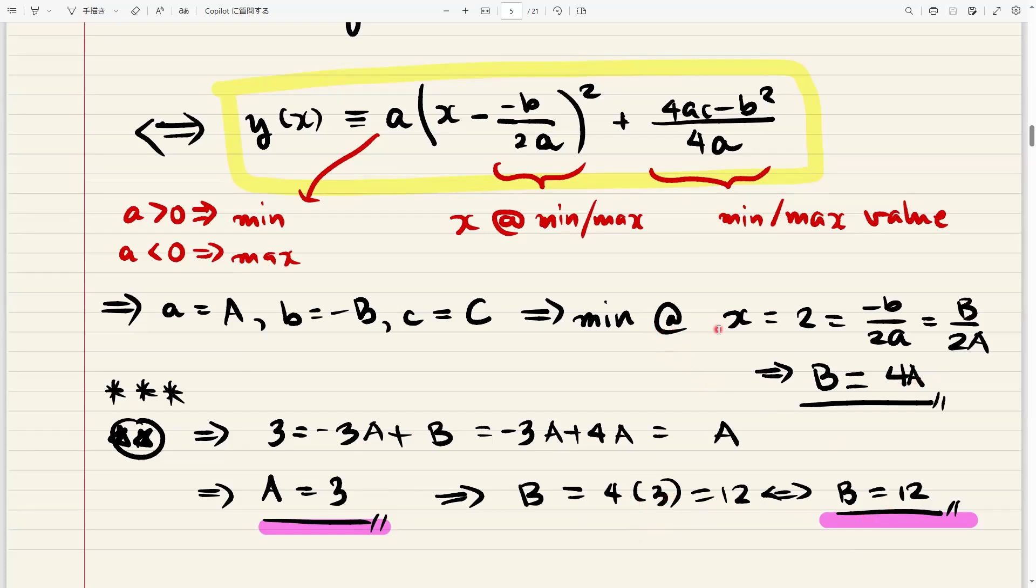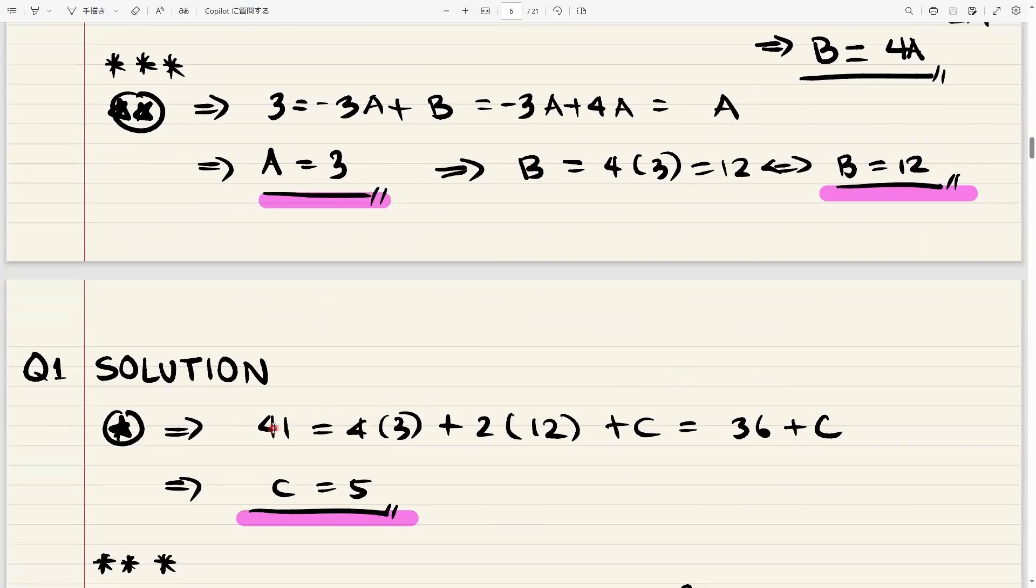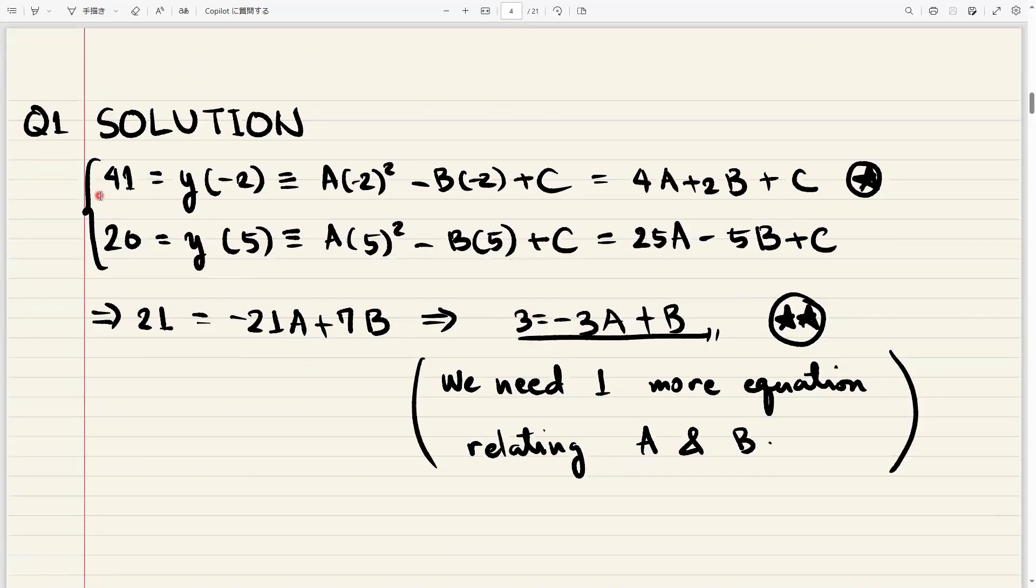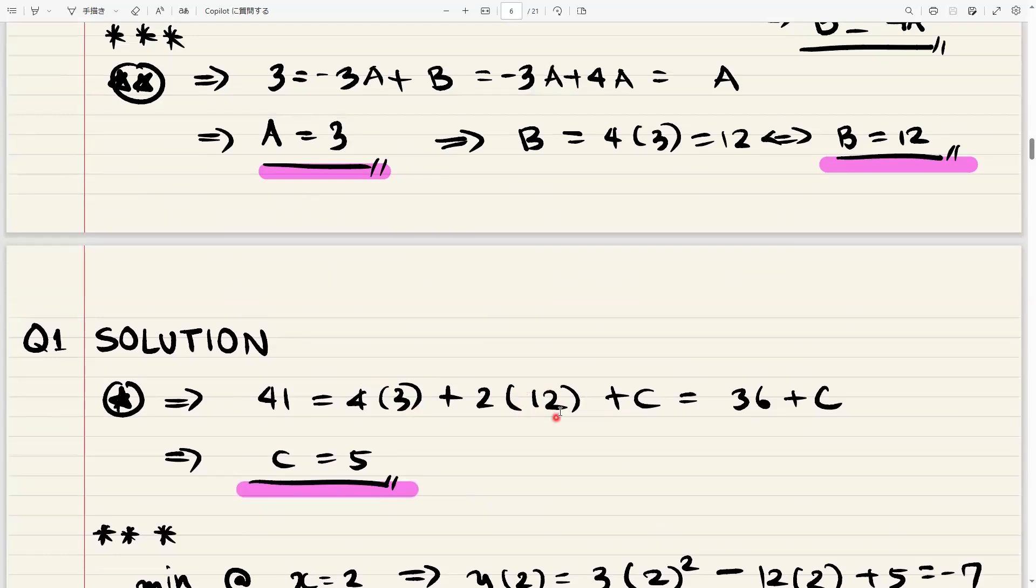Now we're left with c. So how are we going to find c? So we use a previous equation. We can use either this one on top or this one on the bottom. But I'm going to choose this one on top because the numbers are smaller. So the computation would be easier. So that equation was 41 equals four a plus two b plus c. But we already know a to be three. We already know b to be 12. So we replace them. And we get 36 plus c on this side. We get 41 on the other side. And so finally, we get c equals five.